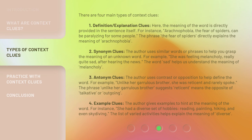There are four main types of context clues. 1. Definition and explanation clues — here, the meaning of the word is directly provided in the sentence itself.